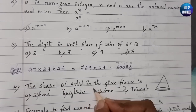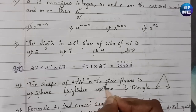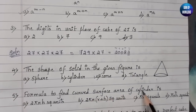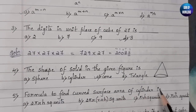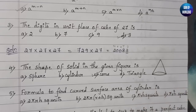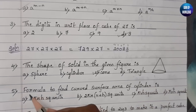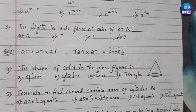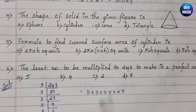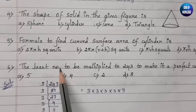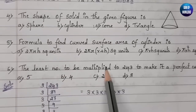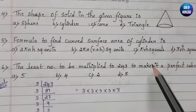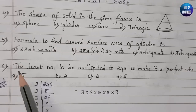The fourth question asks us to identify the shape of the solid in the given figure — it is a cone. The fifth question asks for the formula to find the curved surface area of a cylinder, which is 2πrh.